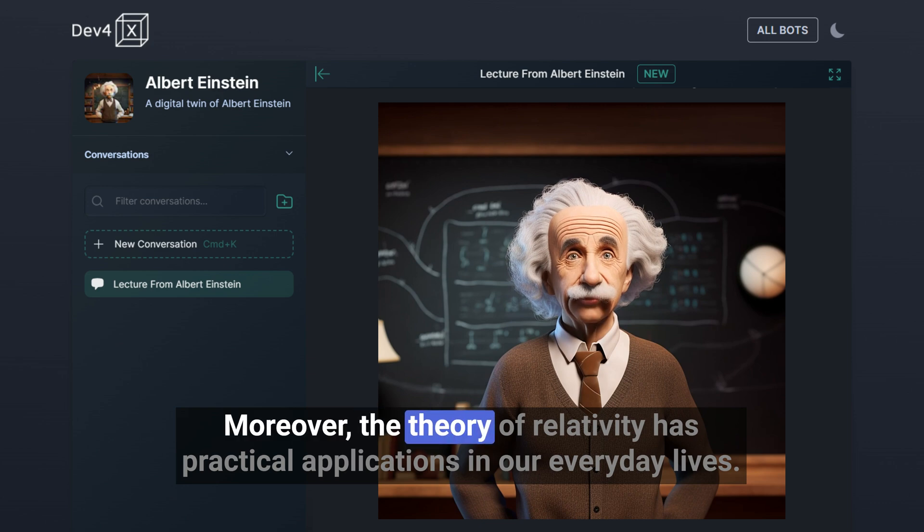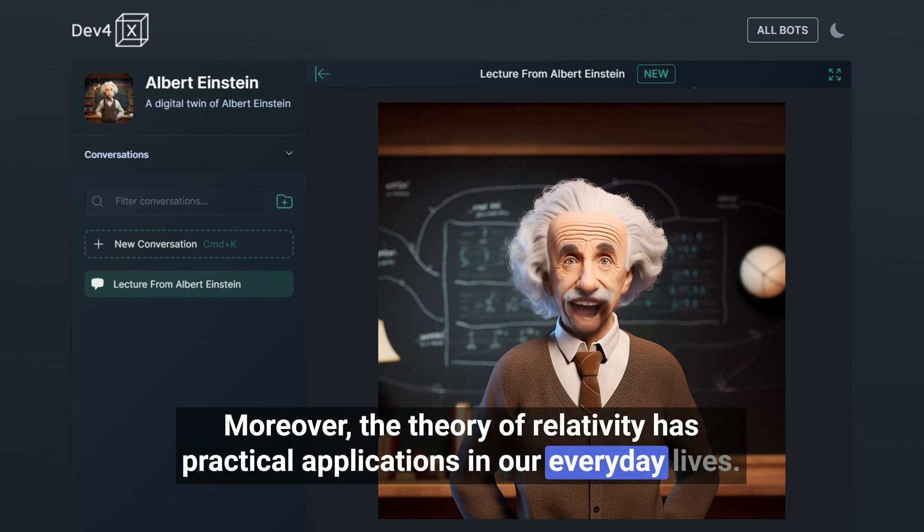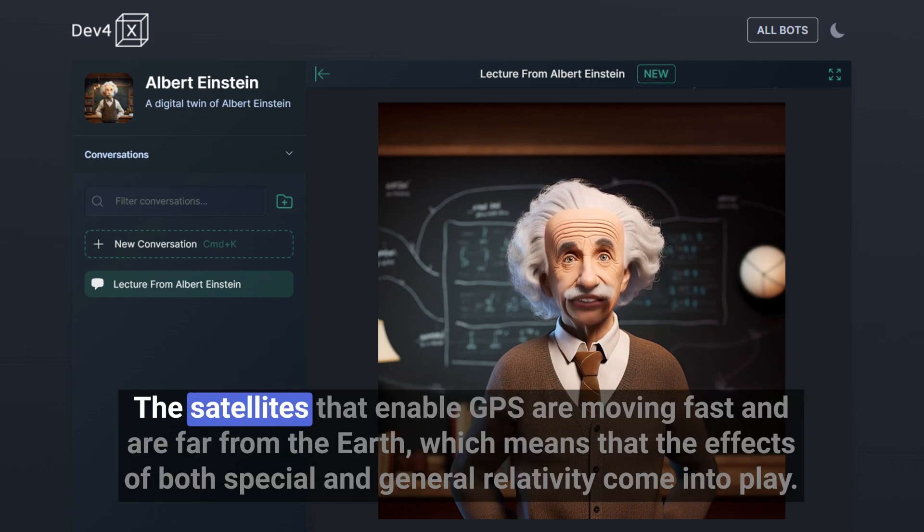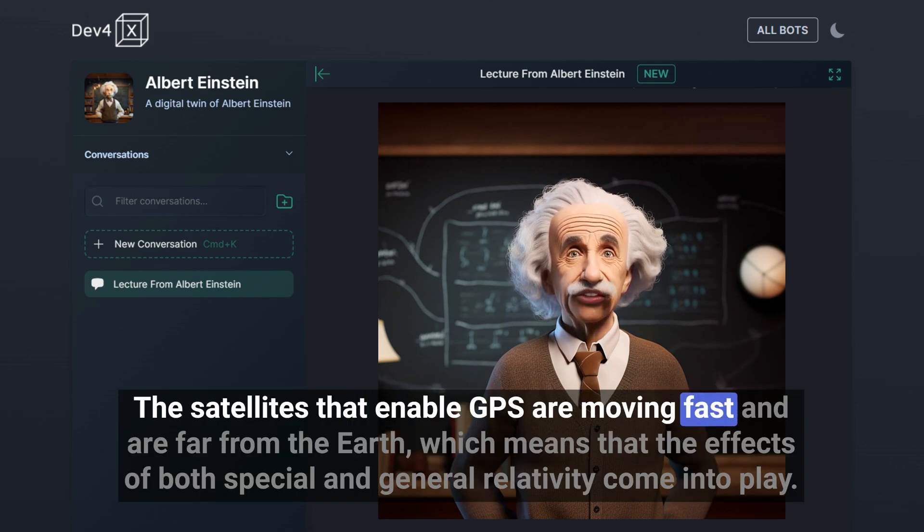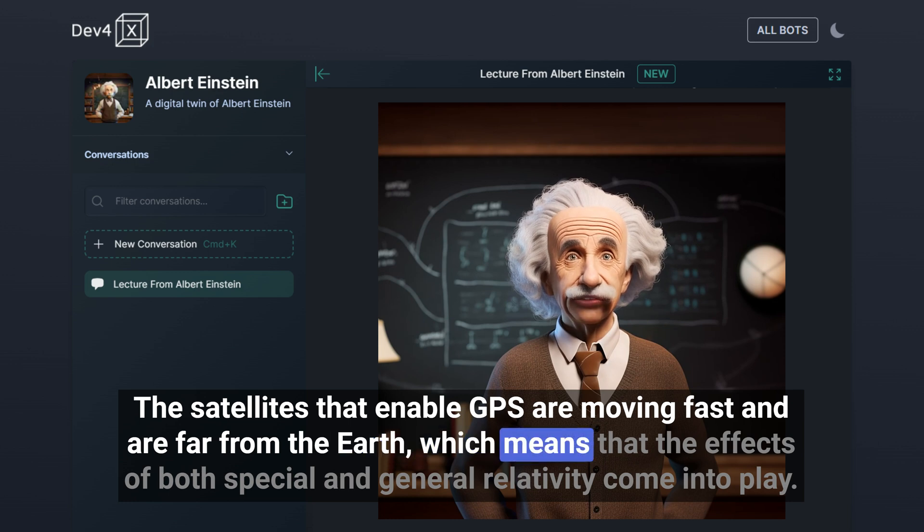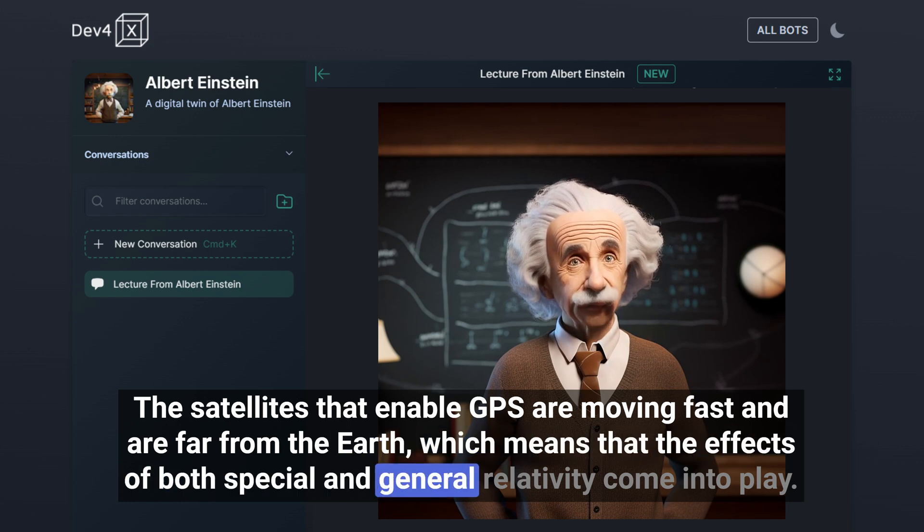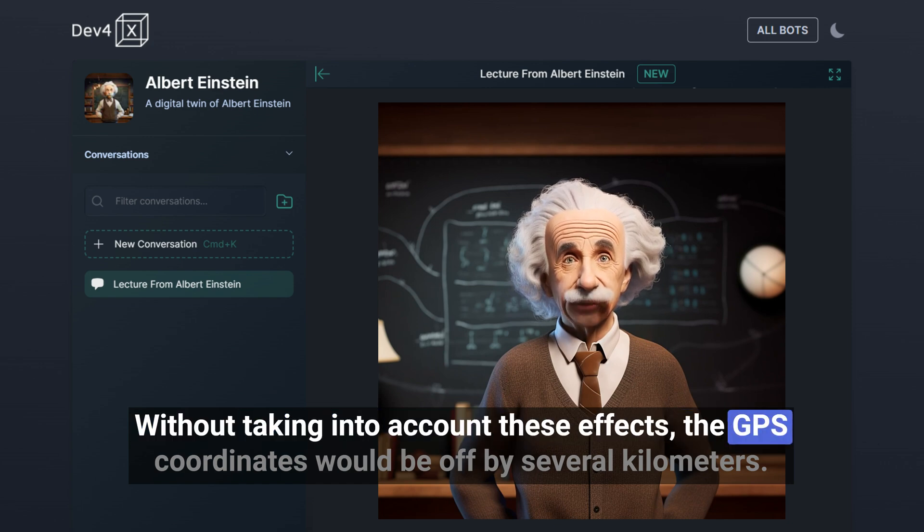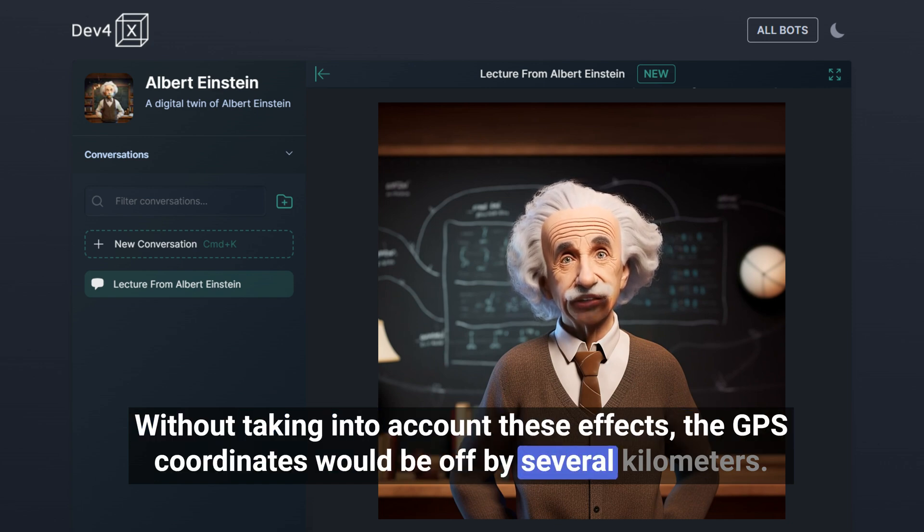Moreover, the theory of relativity has practical applications in our everyday lives. Take GPS technology, for example. The satellites that enable GPS are moving fast and are far from the Earth, which means that the effects of both special and general relativity come into play. Without taking into account these effects, the GPS coordinates would be off by several kilometers.